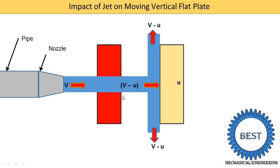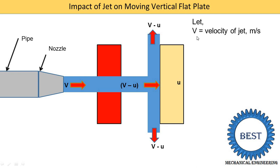At what velocity does the jet of water strike the plate? In the moving plate case, the water strikes the plate at a velocity known as the relative velocity. The relative velocity is V minus U. When both the jet and the object are moving in the same direction, we subtract: relative velocity = V minus U.